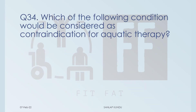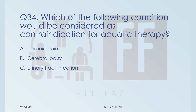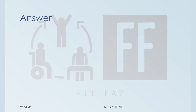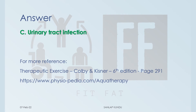Question number 34: which of the following would be considered a contraindication for aquatic therapy? Options: A) chronic pain, B) cerebral palsy, C) urinary tract infection, D) multiple sclerosis. The correct answer is option C, urinary tract infection. In cases of multiple sclerosis and cerebral palsy, aquatic therapy can be done with precautions, but in case of UTI you simply cannot put a patient in aquatic therapy.